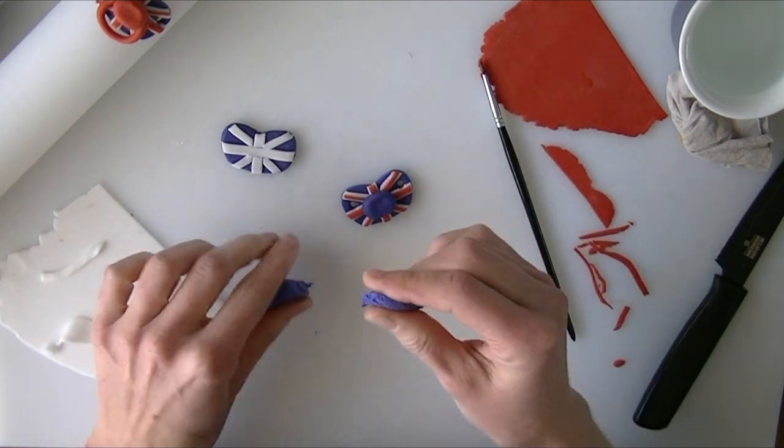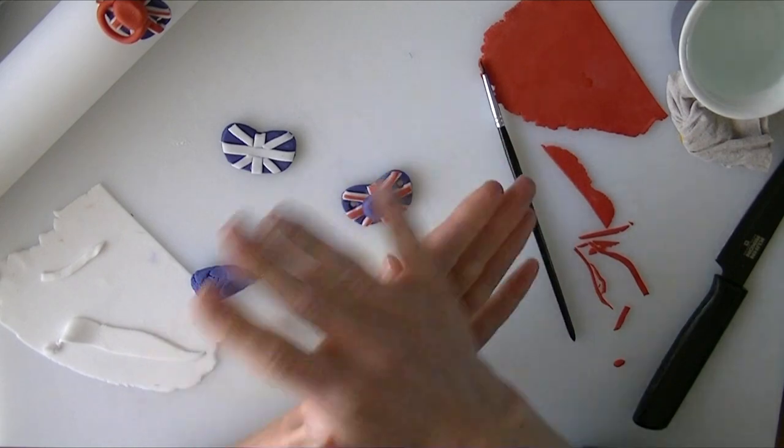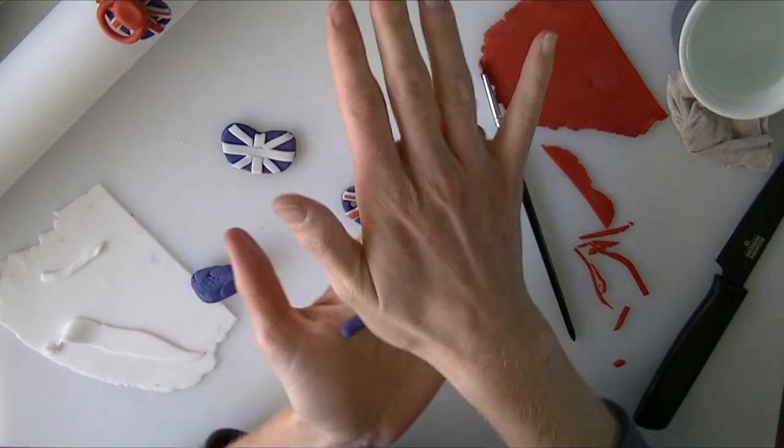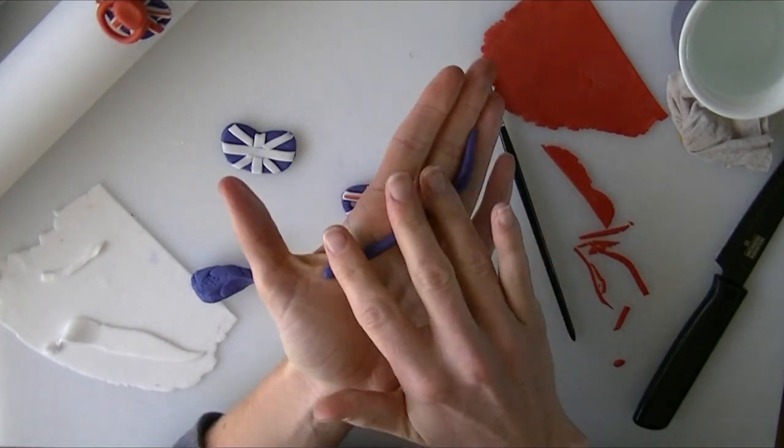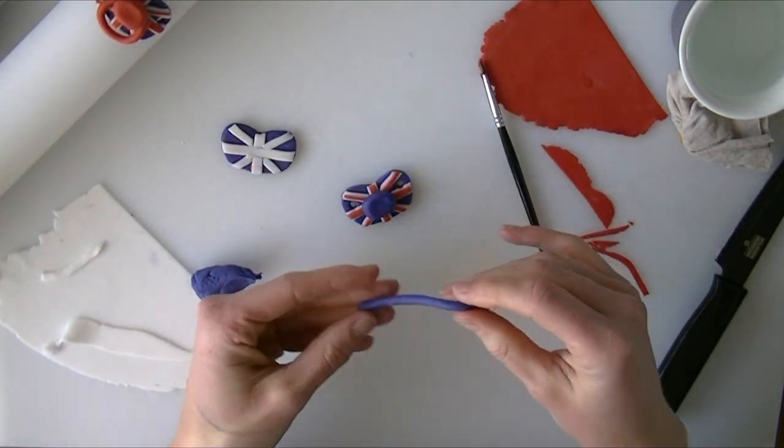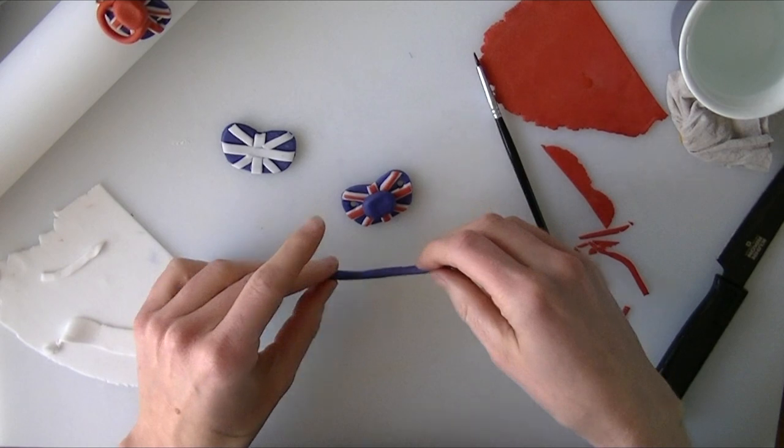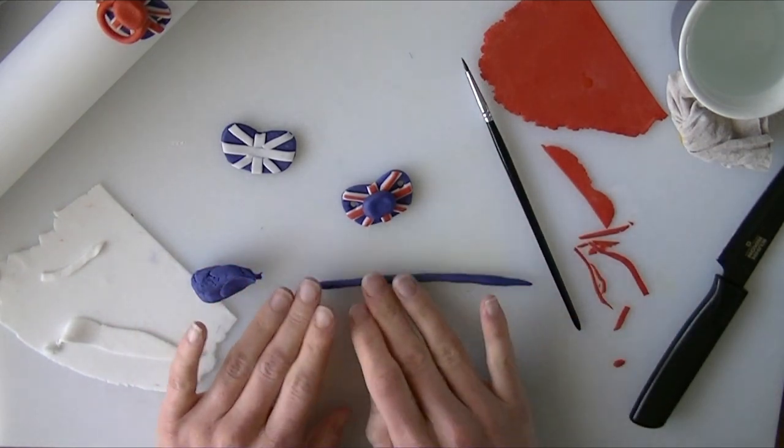Once you're happy with the size, we're going to take a bit more. I'm going to roll it into a long snake shape. It's going to come around for the edge of our dummy. I'm just going to roll it just a tiny bit thinner.